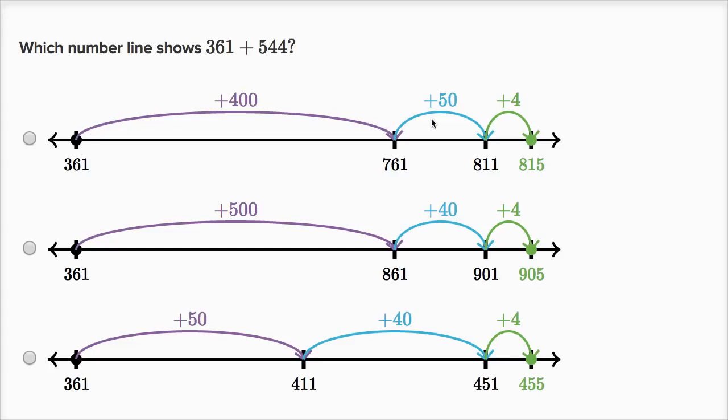This one starts by adding 400, and then 50, and then four. It's adding 454, not 544.